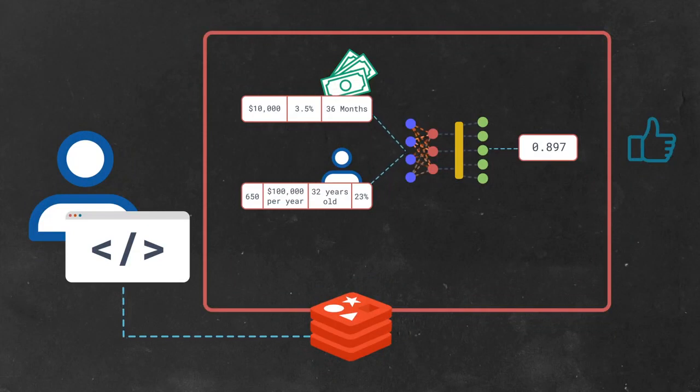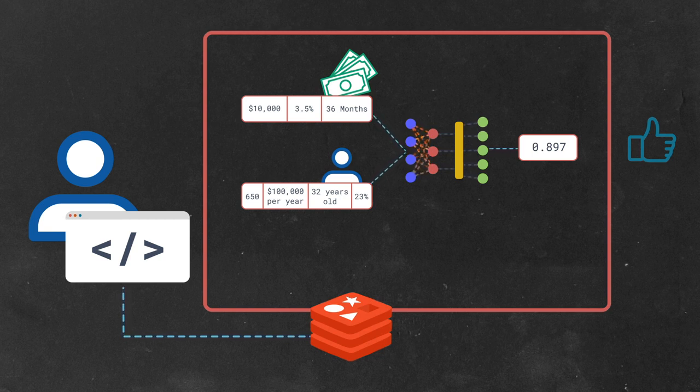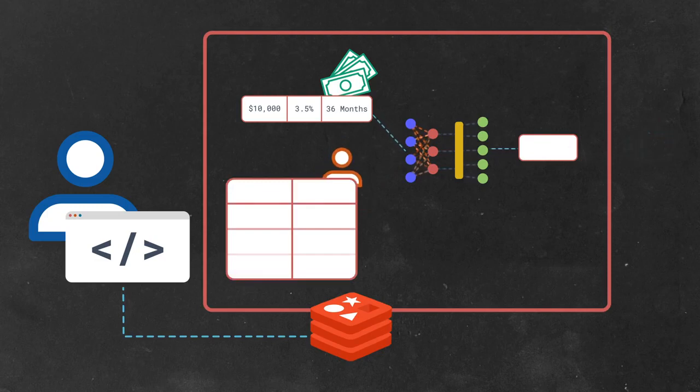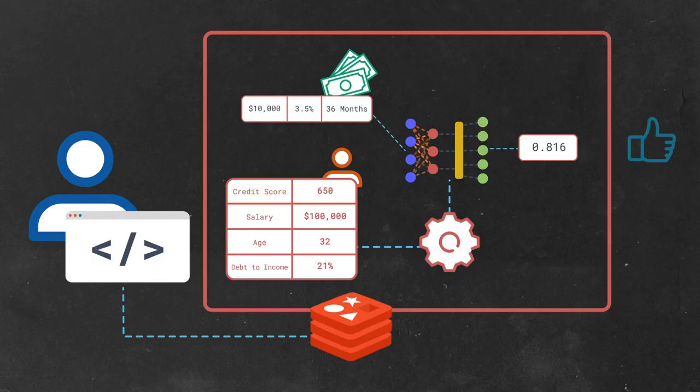So how do we take advantage of data locality with Redis AI? After all, while a customer's banking records might be in Redis, they probably aren't stored as tensors, ready to go for a particular model. Well, that's a big question and a topic for a future video. But the short version is that we use Redis Gears, which is another Redis module, to load the data you already store in Redis into tensors for a model to consume.